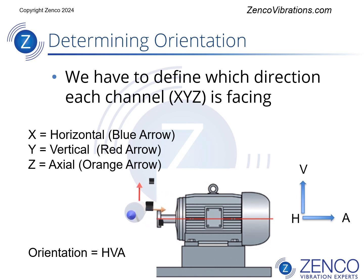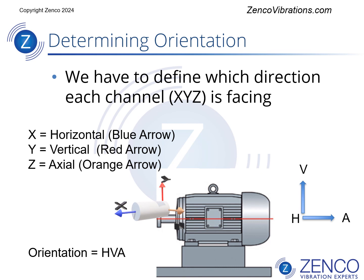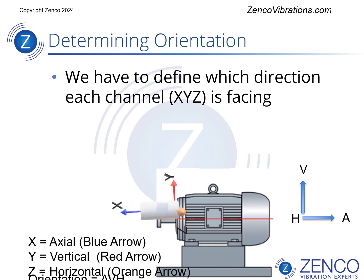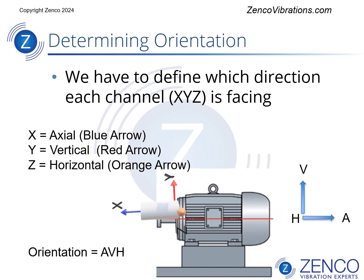If we move the sensor to another position, the orientation changes yet again. Now the X is in the axial direction — the blue arrow — the Y is vertical, and the Z is horizontal.